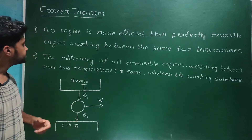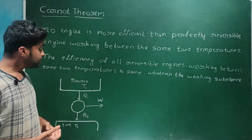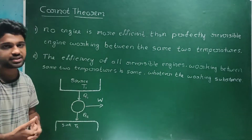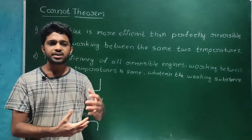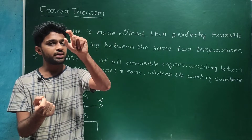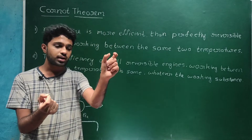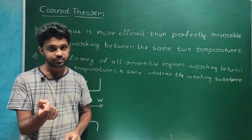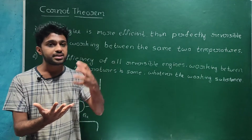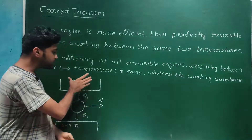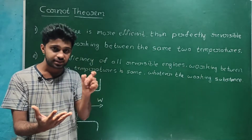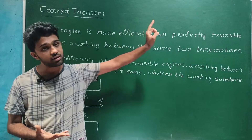The source and sink temperatures are constant. In this situation, the engine can be reversible or non-reversible. A reversible engine operates as a normal Carnot engine, while a non-reversible engine is an irreversible engine. If we have both a reversible engine and an irreversible engine, we compare them: the reversible engine's efficiency will be higher. The perfectly reversible engine has maximum efficiency compared to all other engines.